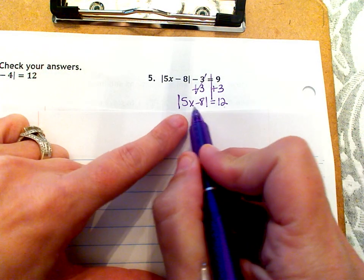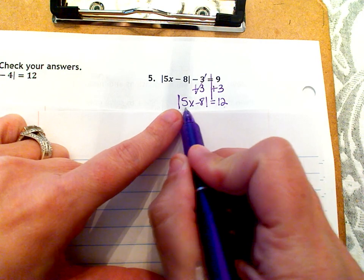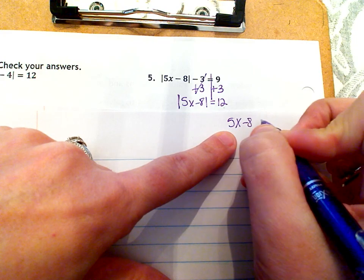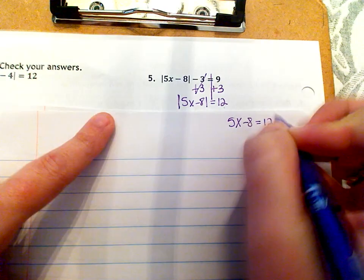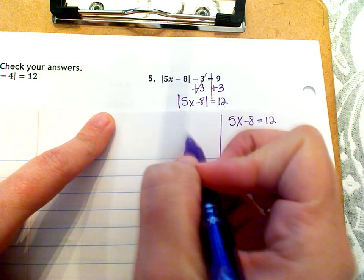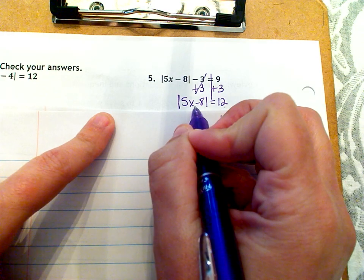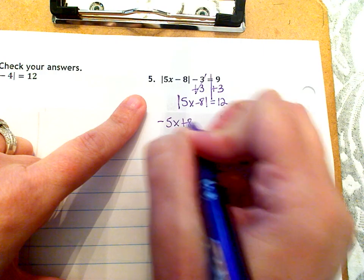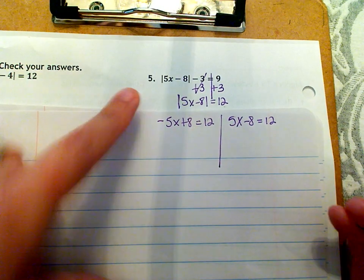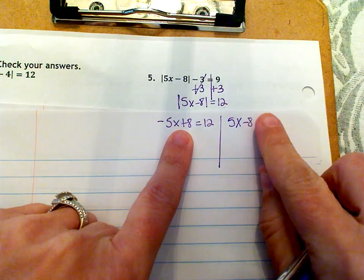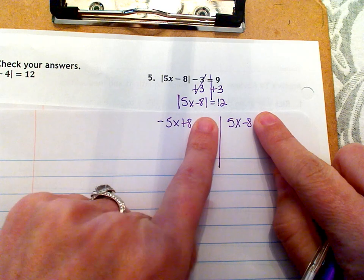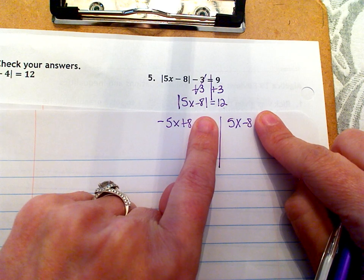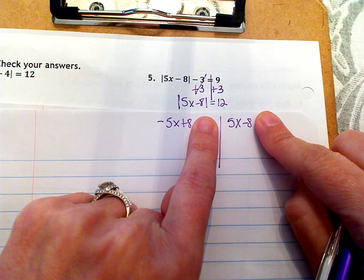And if we think about that V again, this is the right side, which is 5x minus eight, and that equals 12. And then the left side of the V is the opposite of this. So that would be negative 5x plus eight equals 12.